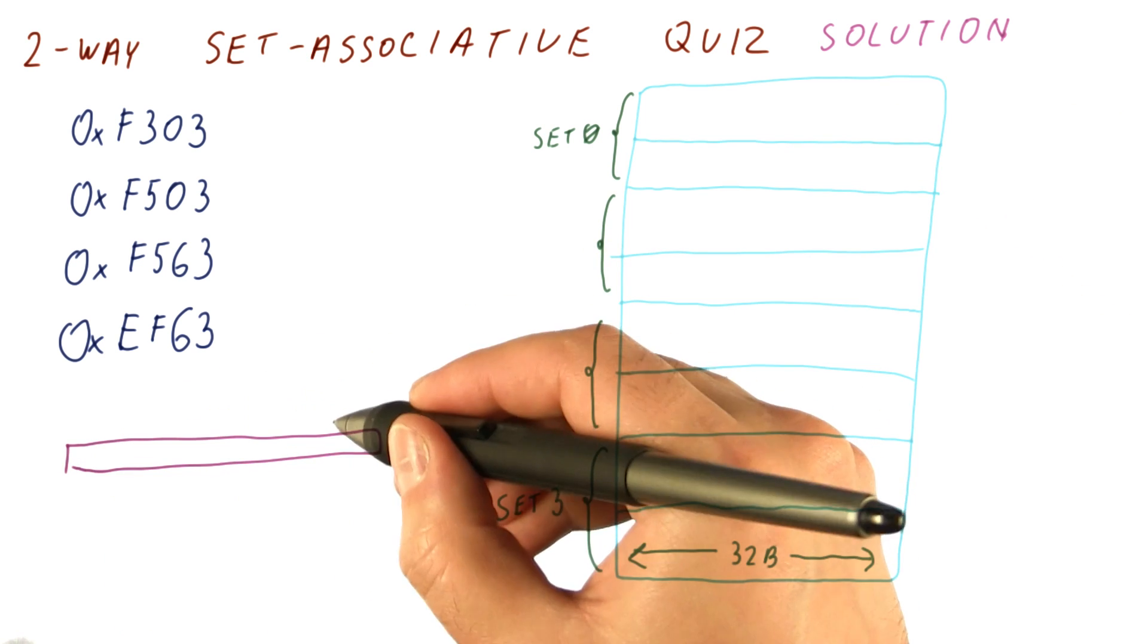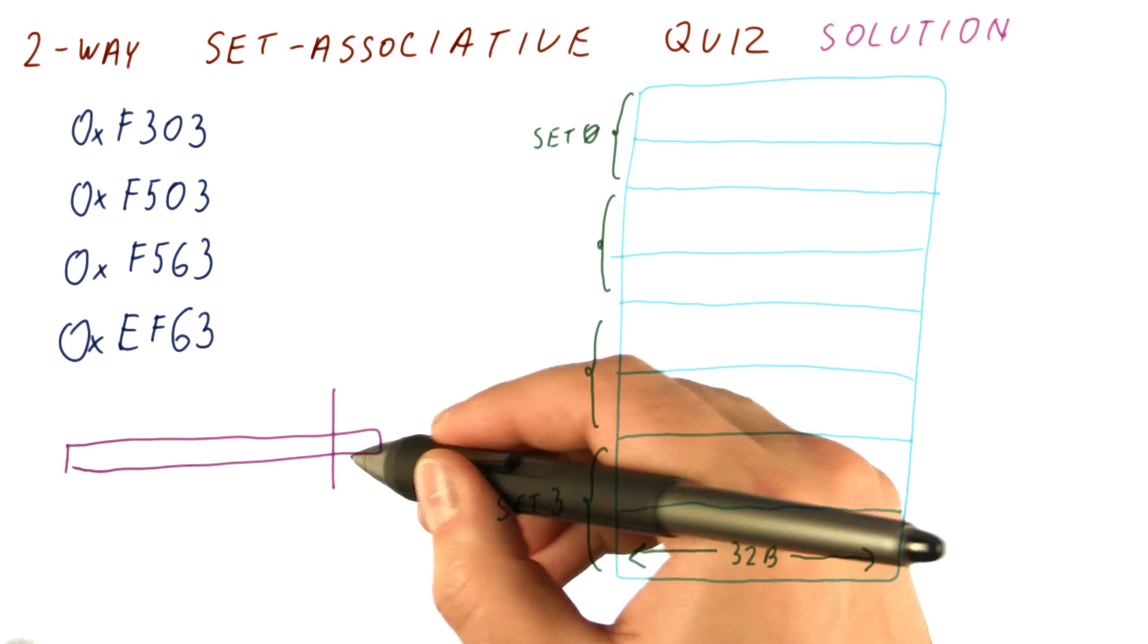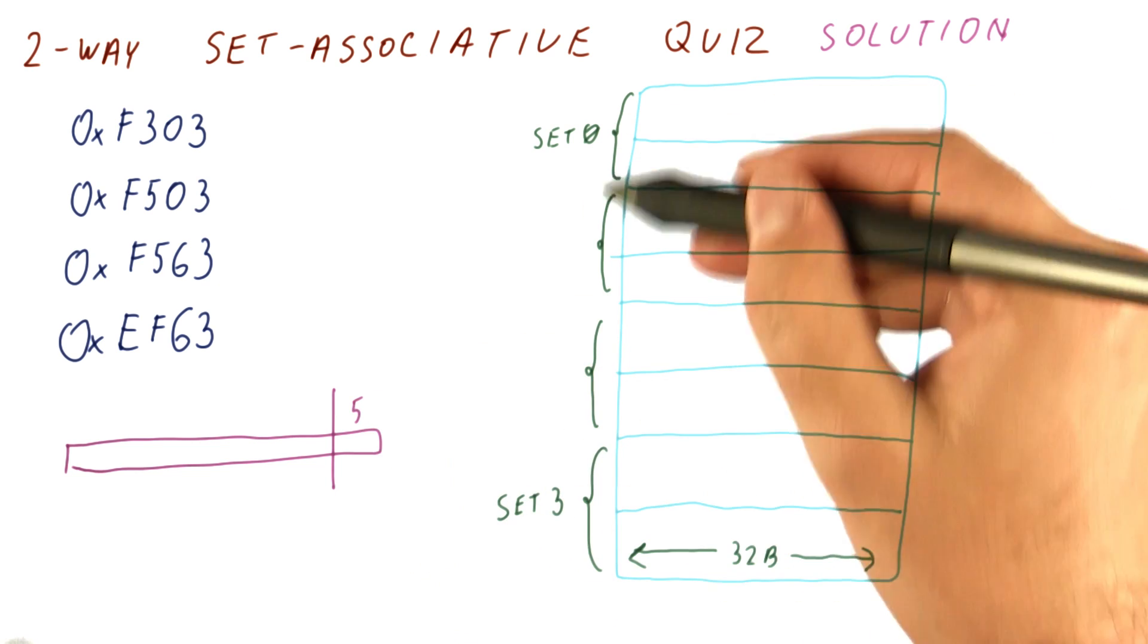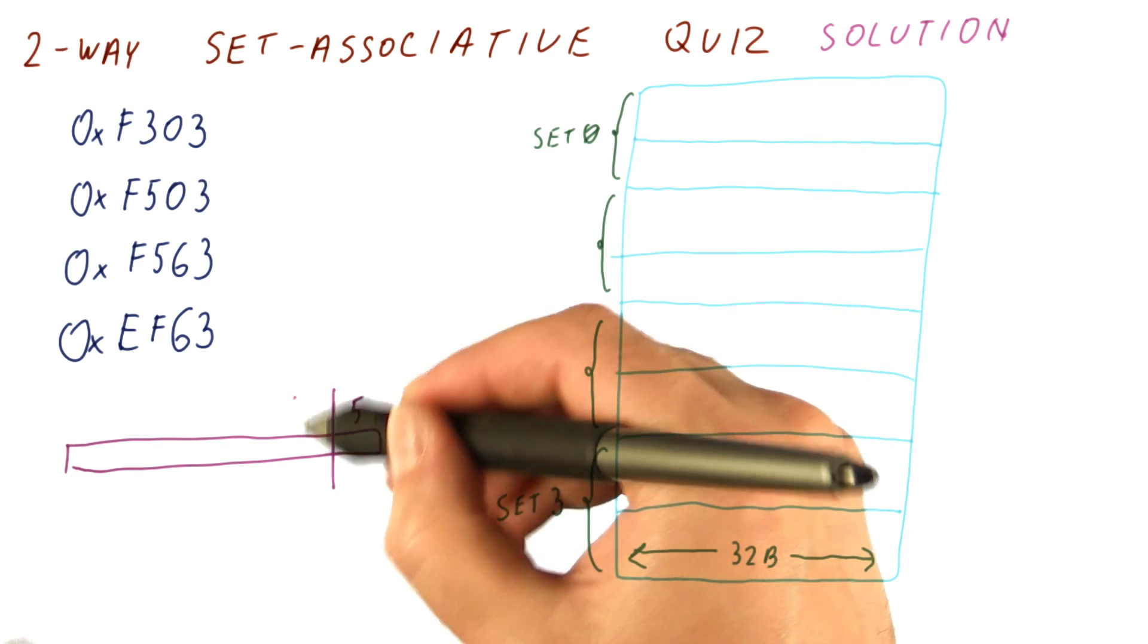So the address will be broken into offset, in this case five bits, index, in this case two bits to tell us which set we have, and the tag.